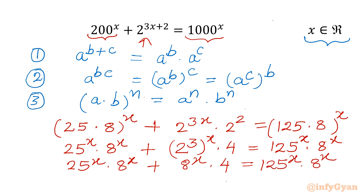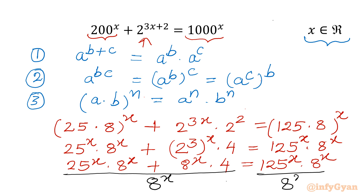Now I will divide both sides by 8 power x. We know that 8 power x cannot be equal to 0, as it is an exponential function. After cancelling 8 power x on both sides, the equation becomes 25 power x plus 4 equal to 125 power x.